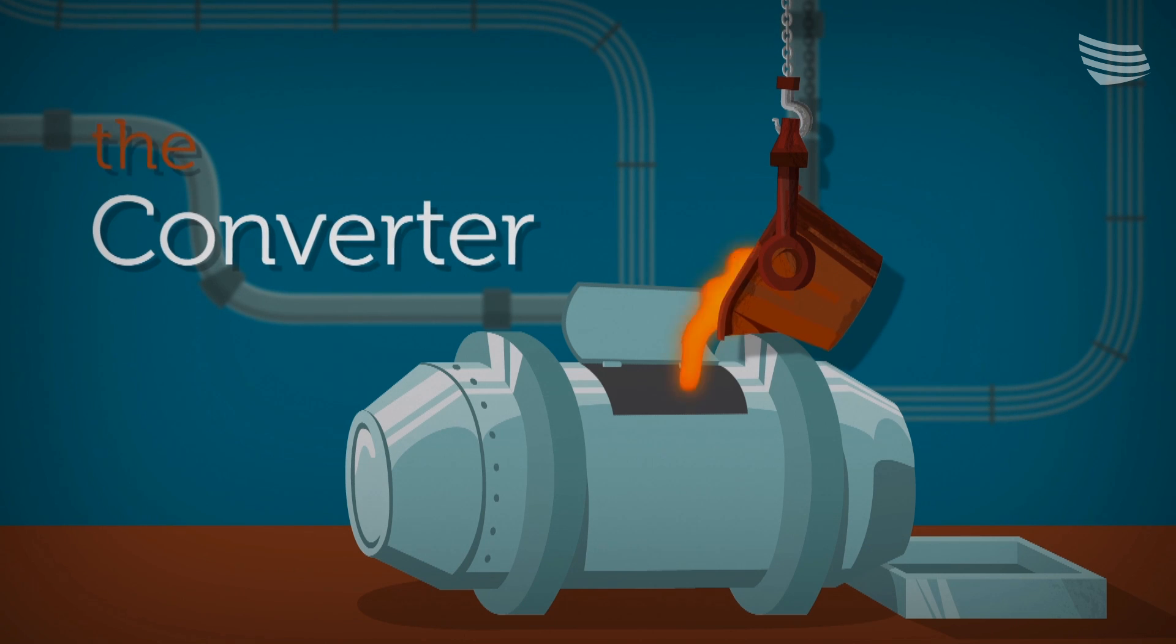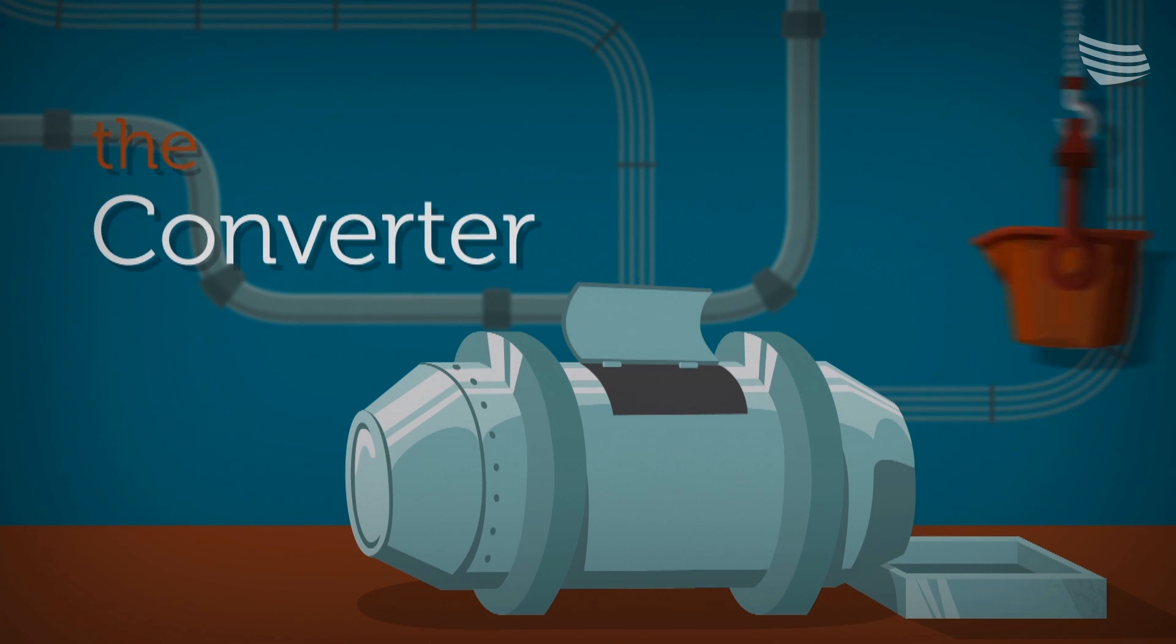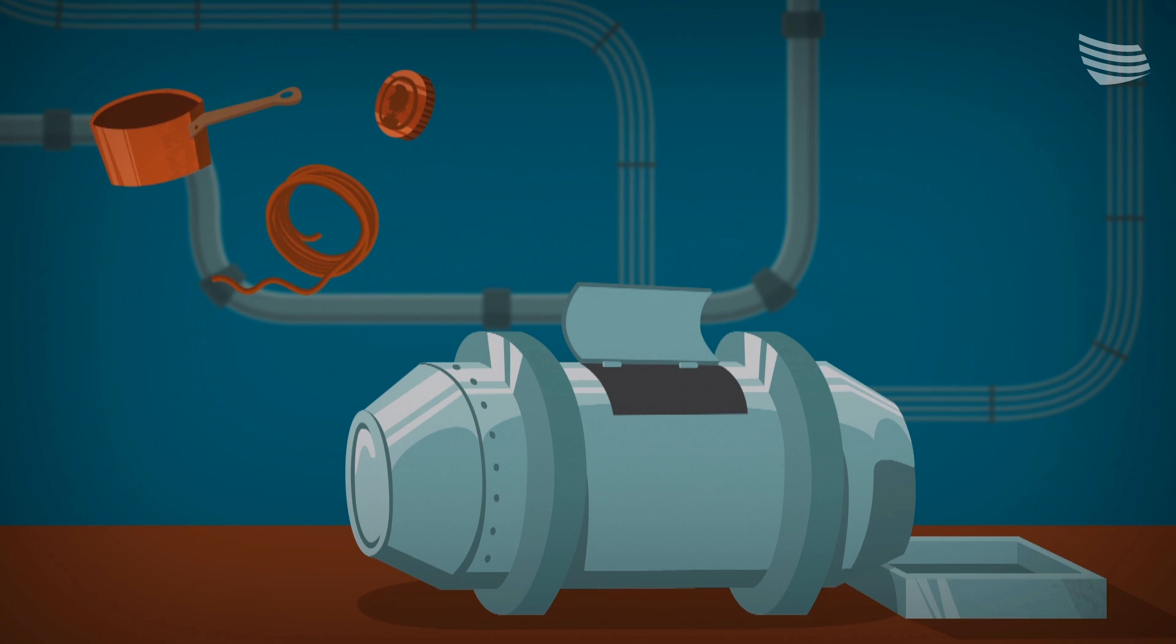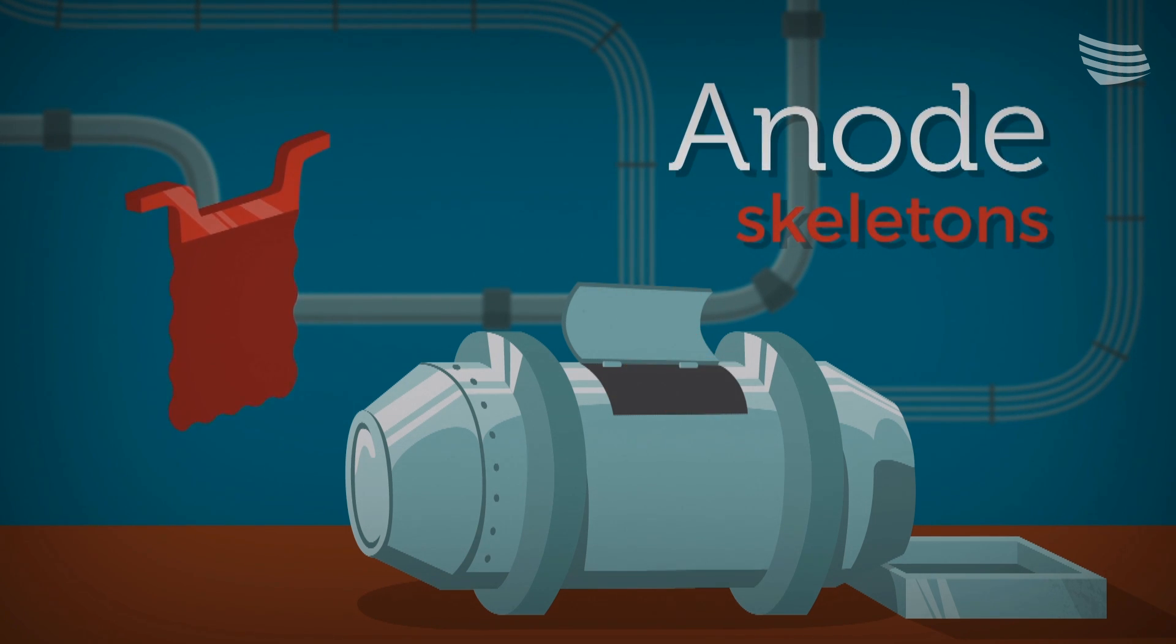The mat is poured from a ladle into another furnace, the converter. Here we add copper scrap and other materials the process needs, like anode skeletons recycled from the last phase of refining.